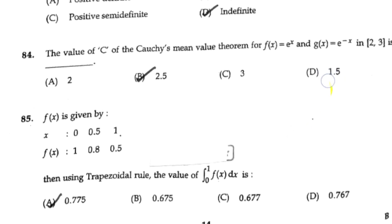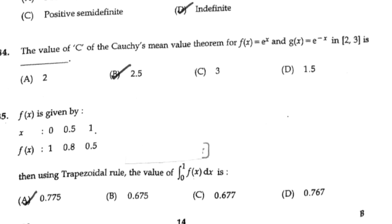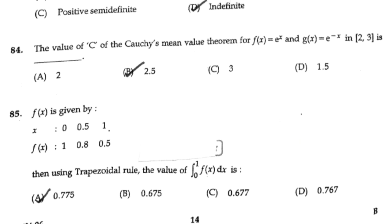The value of c in the mean value theorem for f(x) = eˣ and g(x) = e^(-x) in the interval [2, 3] is 2.5.